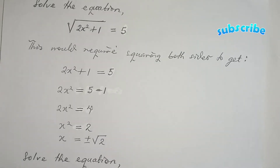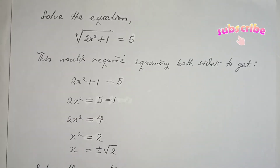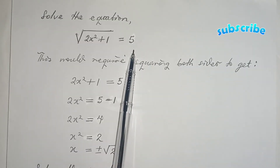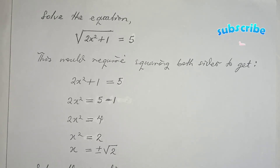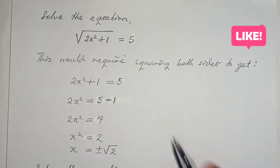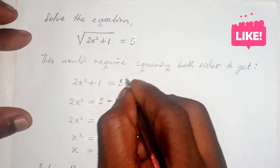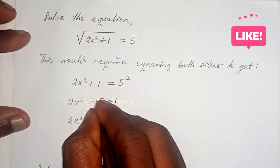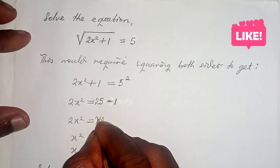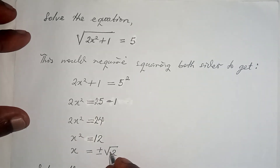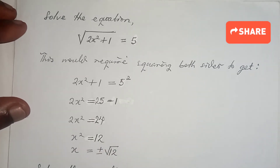Now let's go to the second type: solving a problem where you have the square root of a quadratic expression equaling a constant. This one is simpler — all you have to do is square both sides. Squaring both sides isolates the radical, giving you 2x squared plus 1 equals 5 squared, which equals 25. That reduces to x squared equals 12, so x equals plus or minus the square root of 12.